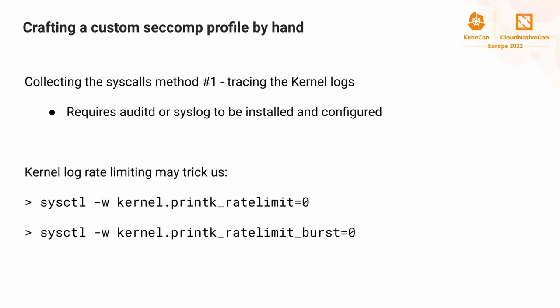The first method to record syscalls is tracing the kernel logs. This requires auditd or syslog to be installed and configured on the system. Many distributions like plain Ubuntu only have syslog, while others ship auditd with a good default configuration. We have to consider that there is a rate limit for both auditd and syslog, and we can set two syscalls to disable the printk rate limit and burst, otherwise we'll miss some syscalls during logging of extensive applications.